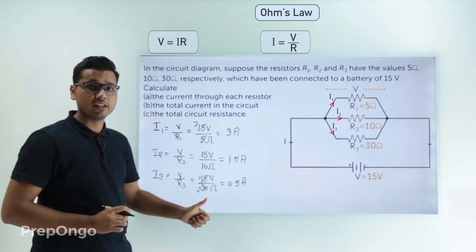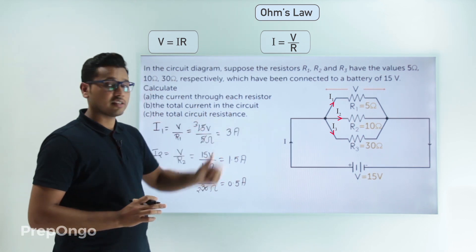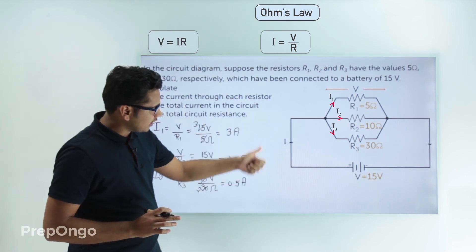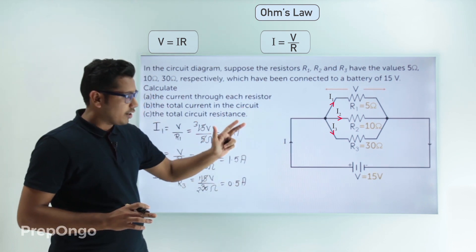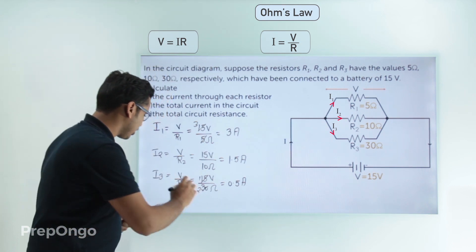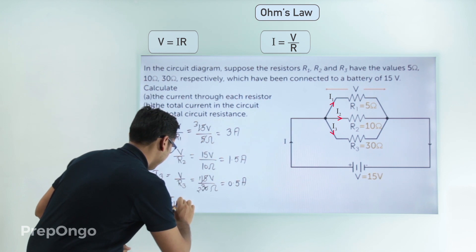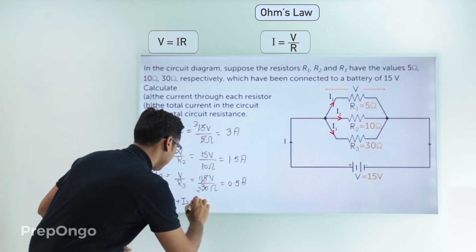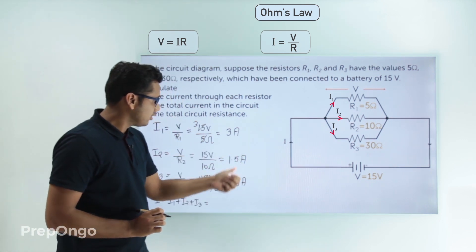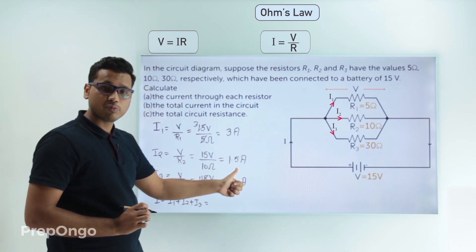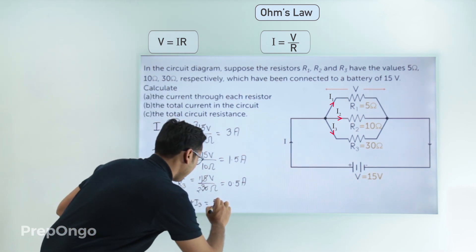The next part asks for the total current in the circuit. The total current I divides into I1, I2, and I3, so summing them gives the total: I = I1 + I2 + I3 = 3 + 1.5 + 0.5 = 5 amperes.